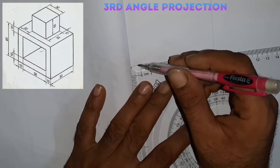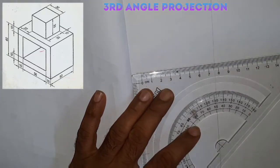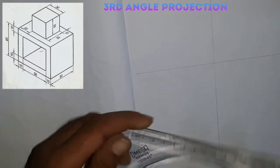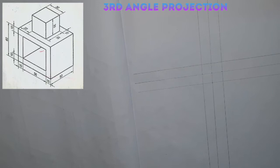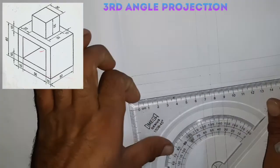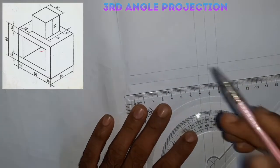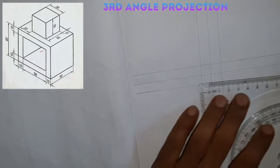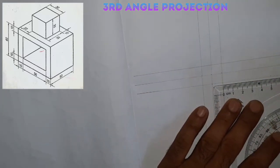We will draw the vertical line. The vertical line is 70mm. This is the side view of the vertical line.